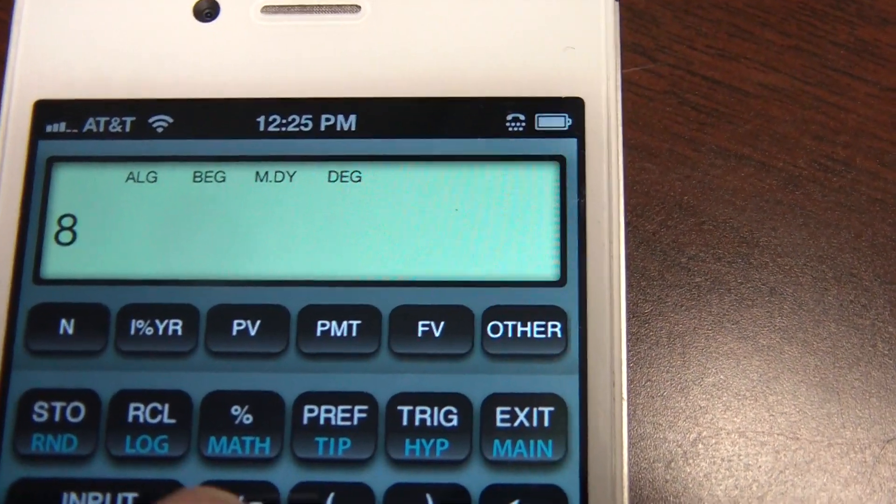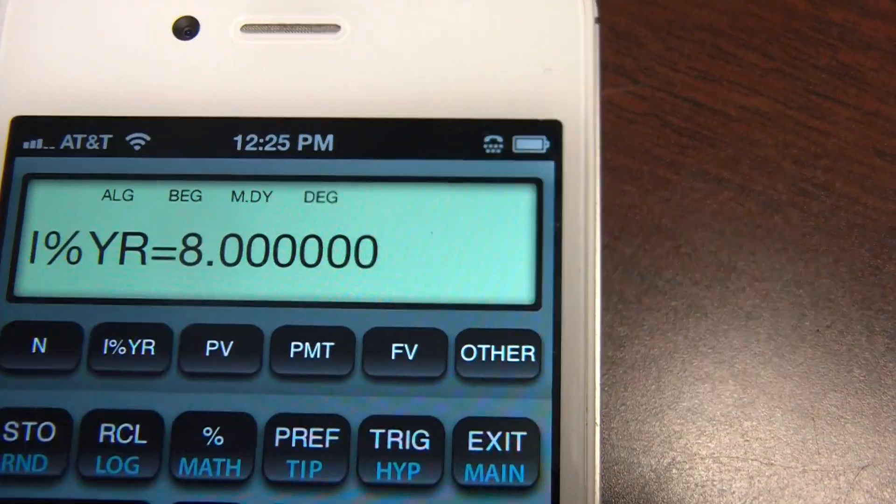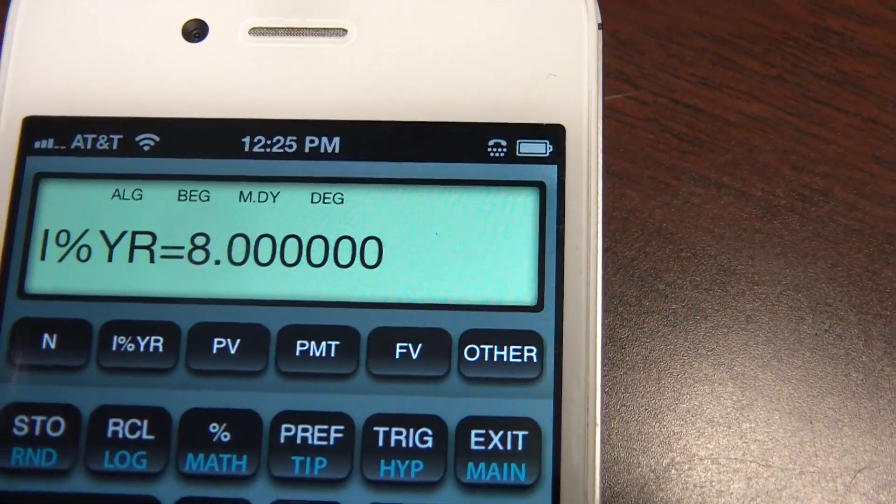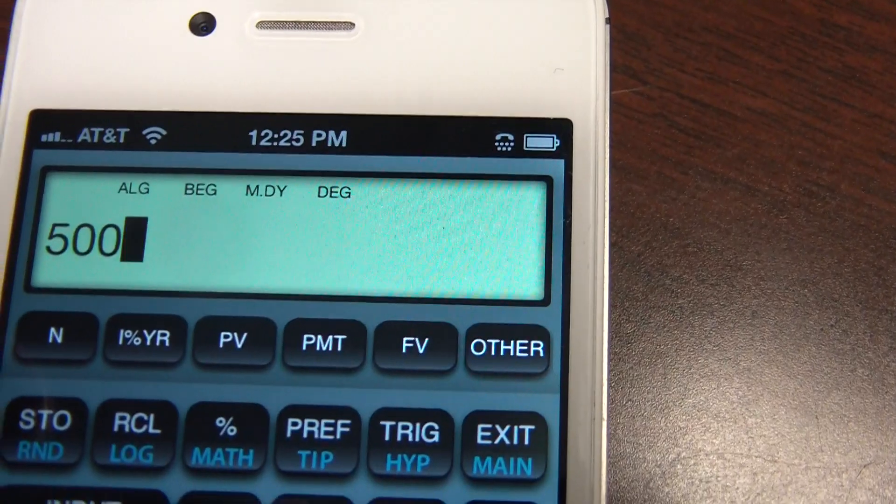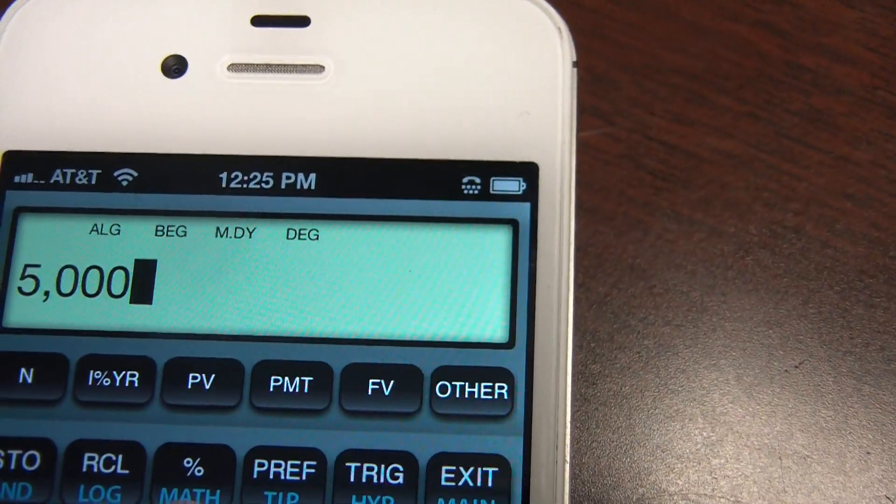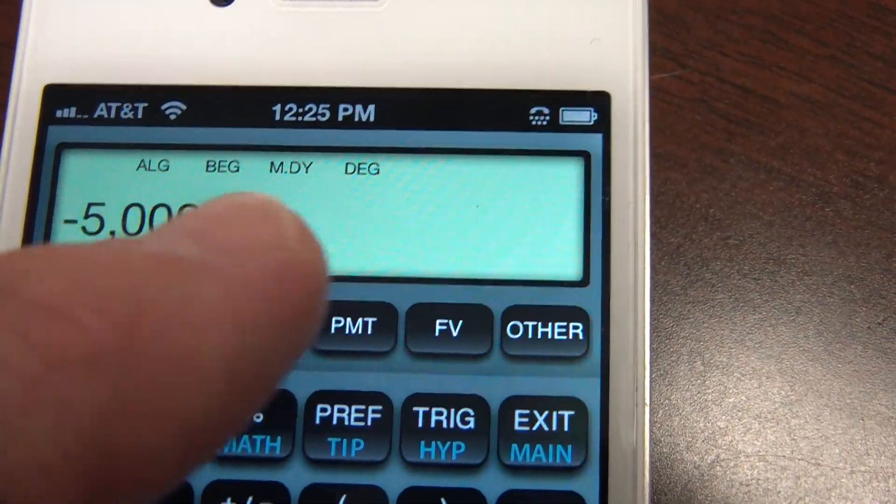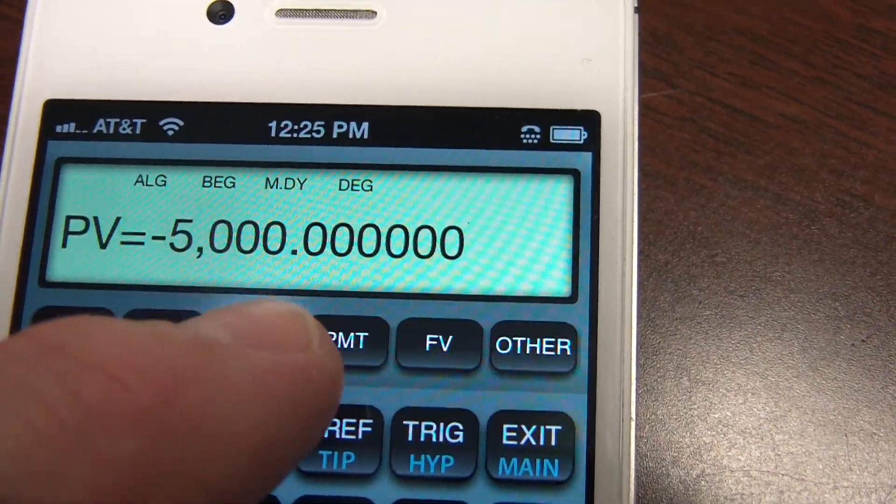If I can get an 8% return, present value I put in $5,000. I put this in as negative because I'm paying it out. That is my present value.